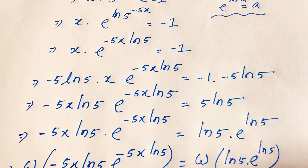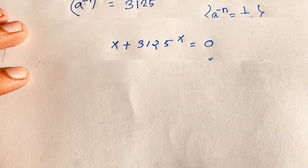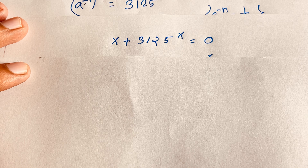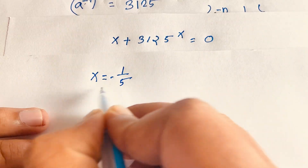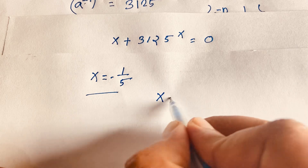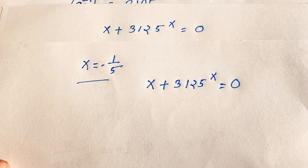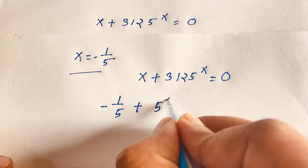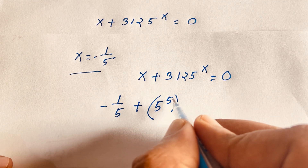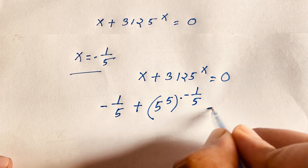Let's verify our answer. Substituting x equals minus 1 over 5 into x plus 3125 to the power x equals 0: the value 3125 is 5 to the power 5, and the exponent x is negative 1 over 5. So we get minus 1 over 5 plus 5 to the power 5 to the power negative 1 over 5 equals 0.